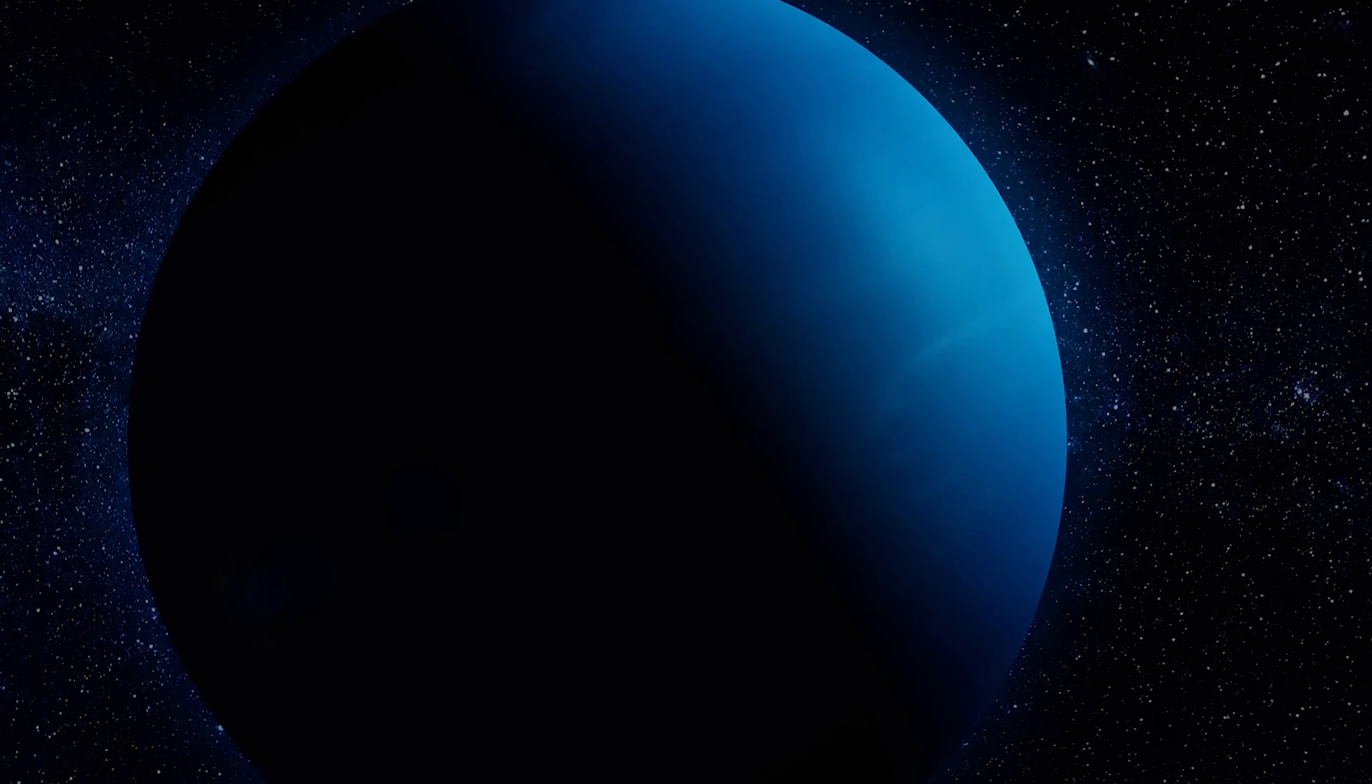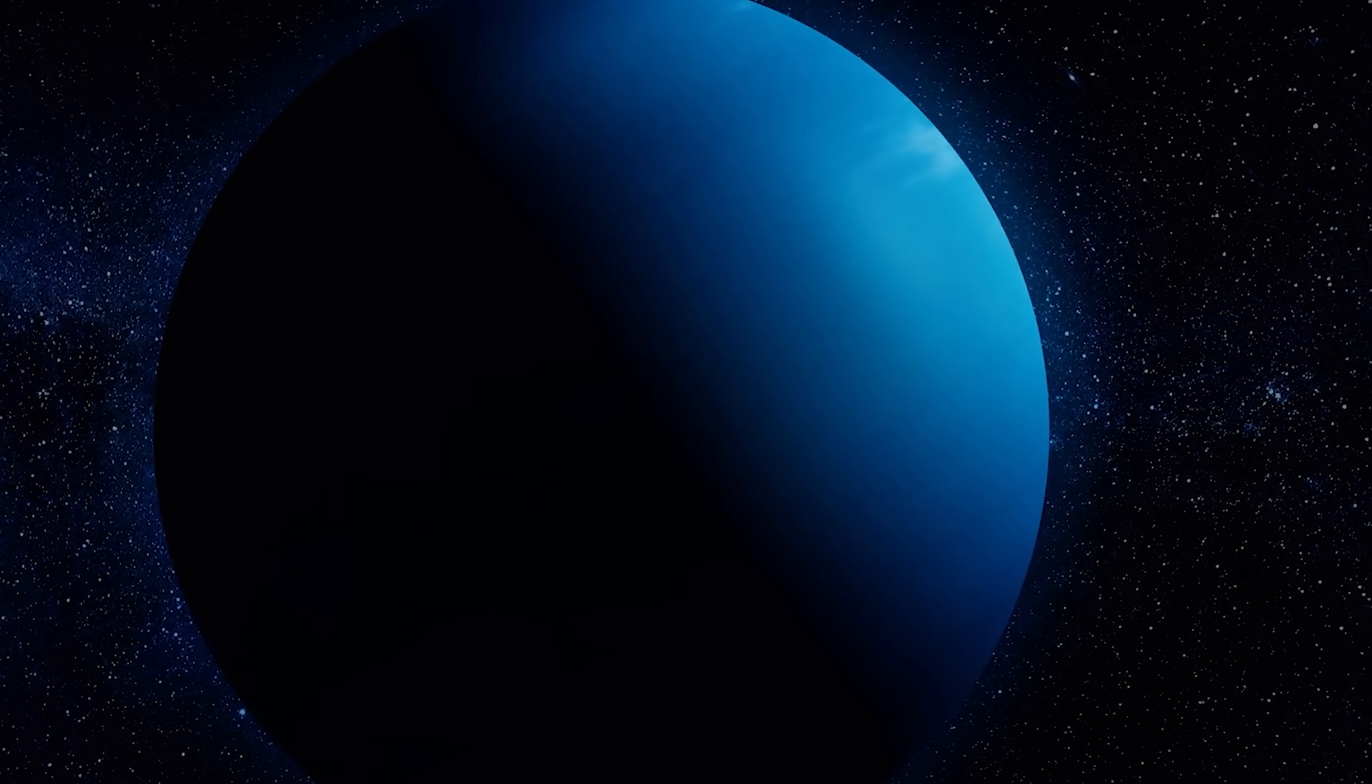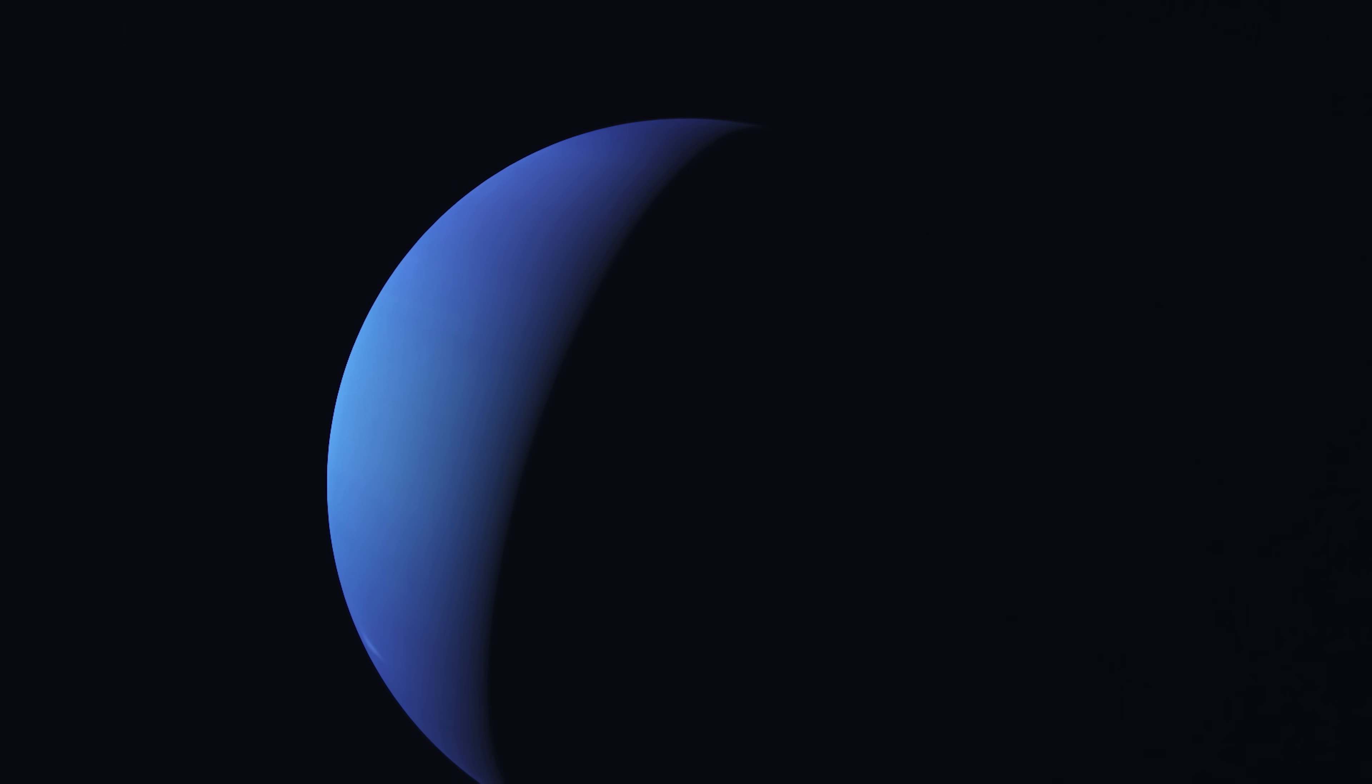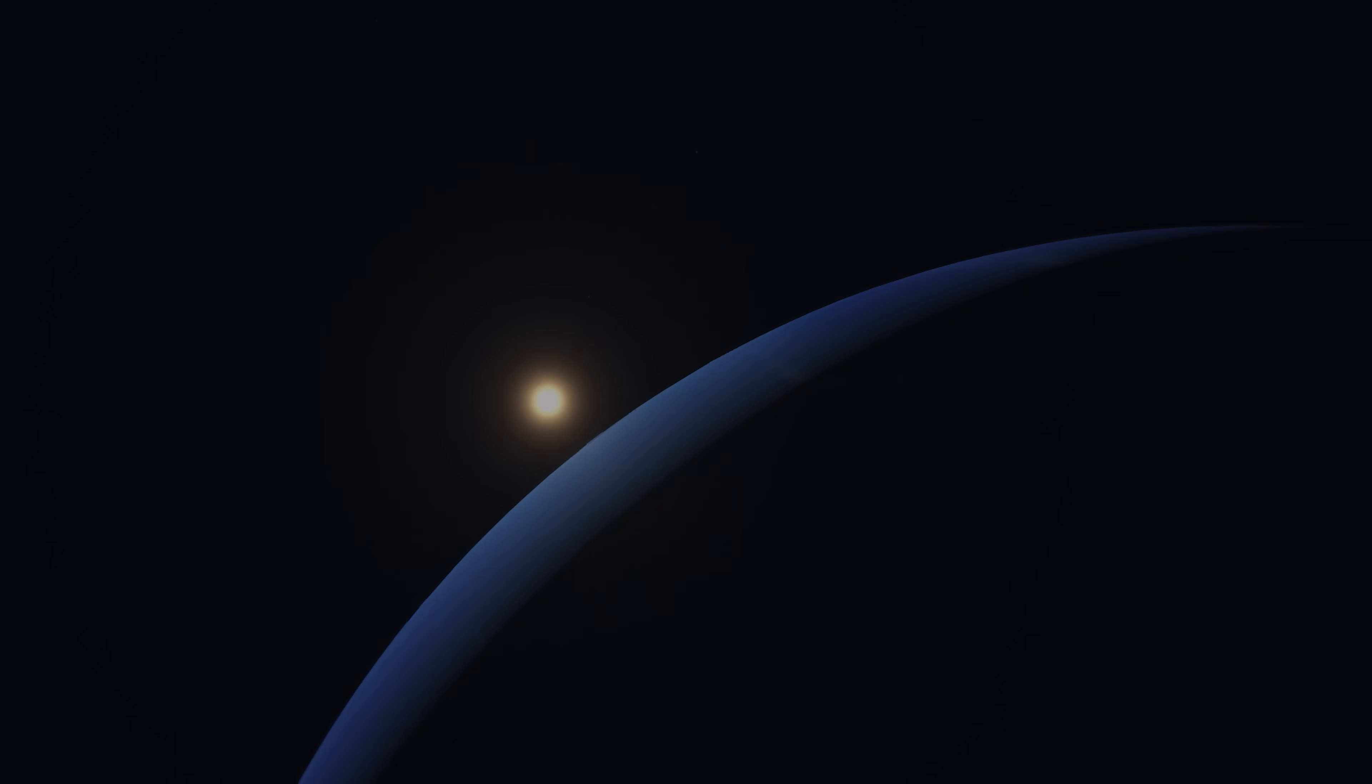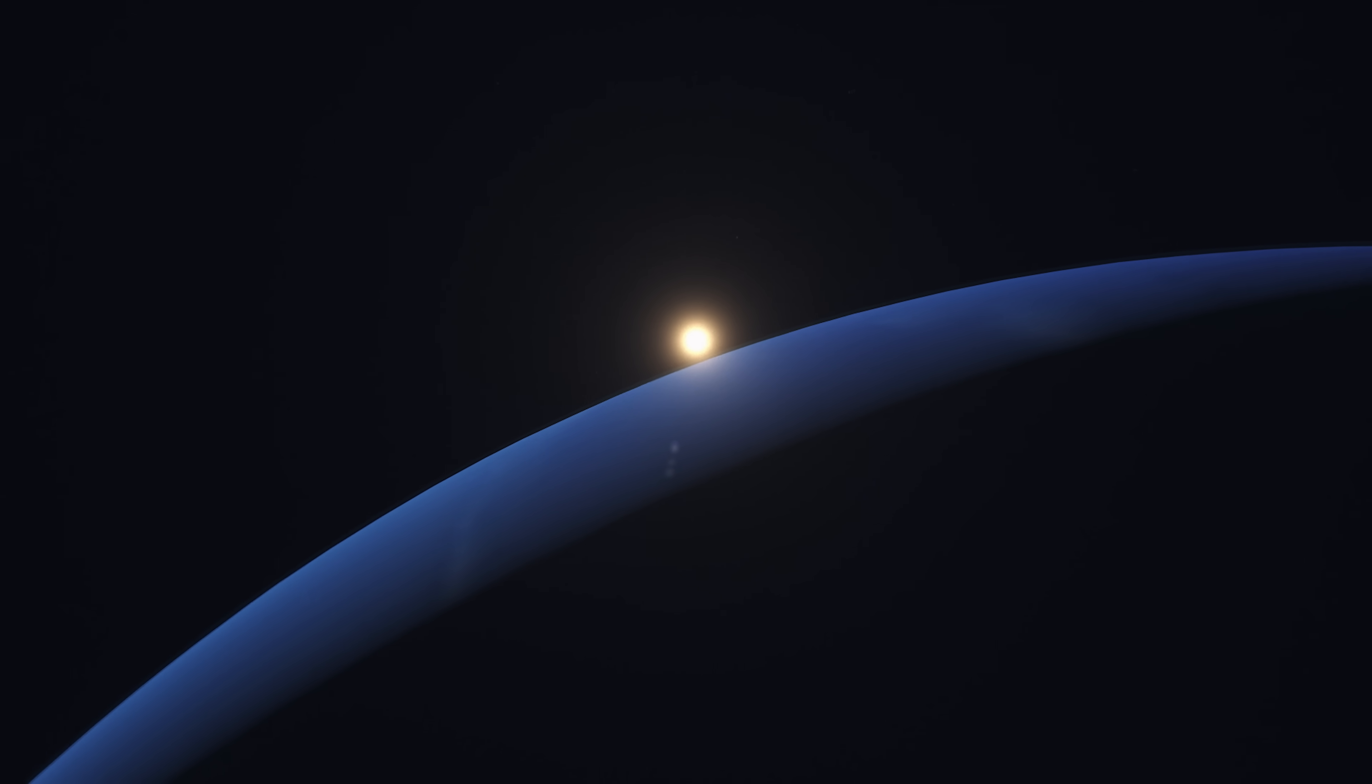For decades, the Planet Nine hypothesis has captured the imagination of astronomers and the general public. This hypothesis suggests the existence of a giant planet about the diameter of Neptune that has never been observed and could be in a distant orbit from the Sun beyond Neptune.